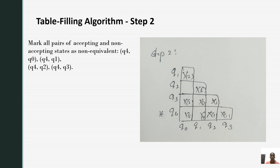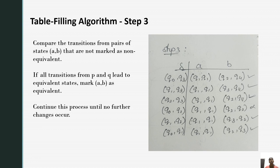The next step is compare the transitions from paired states that are not marked as non-equivalent. If all transitions from P and Q or A and B lead to equivalent states, mark A and B as equivalent.